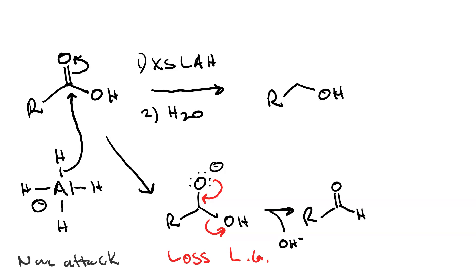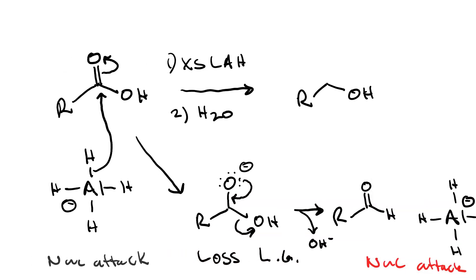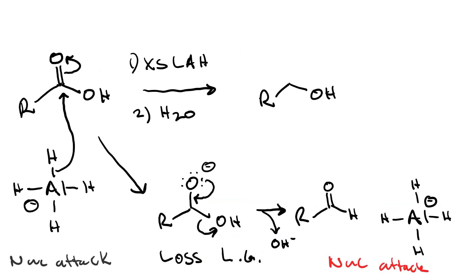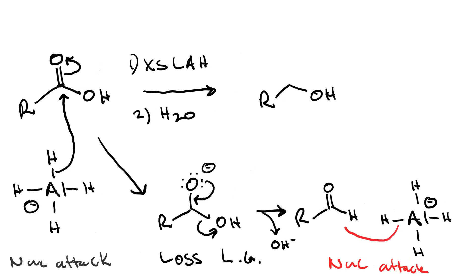This results in an aldehyde. Our third step is nucleophilic attack once again, where our extra equivalent of aluminum hydride ion attacks the carbonyl carbon, which exceeds the octet, and so now we make another alkoxide.